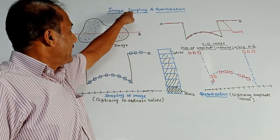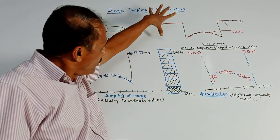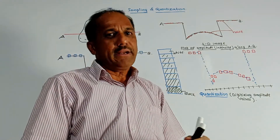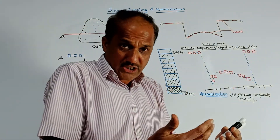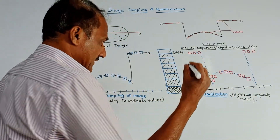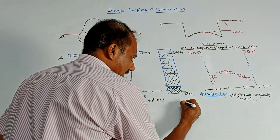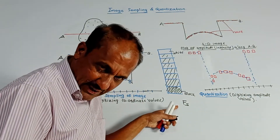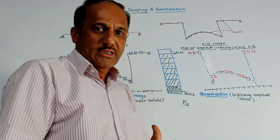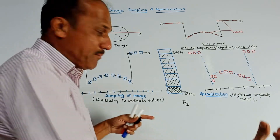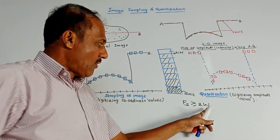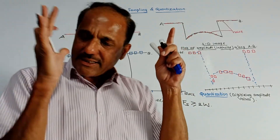The next and important part is image sampling and quantization. First, recall the sampling theorem from digital communication, which is equally applicable for image processing. There is a sampling frequency — the frequency by which you take samples of the input signal — and this frequency should be greater than or equal to 2W, where W is the maximum frequency.